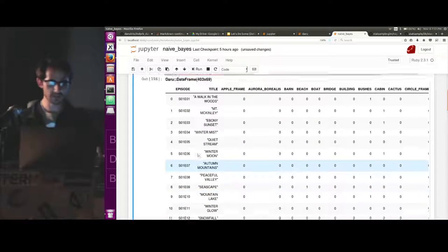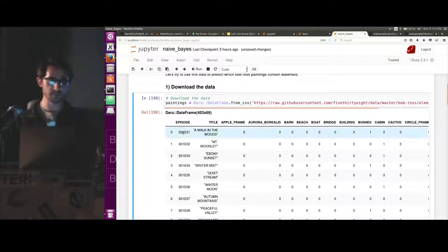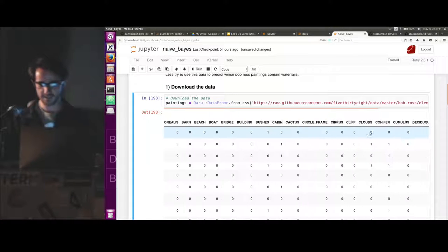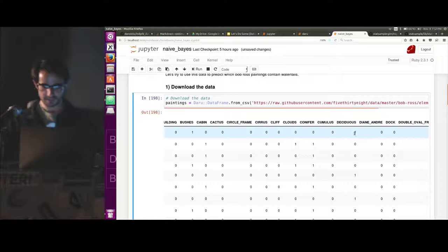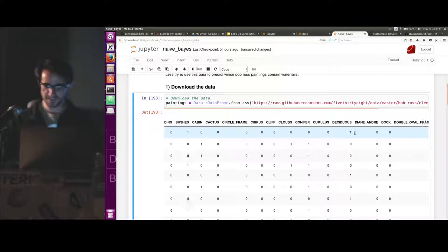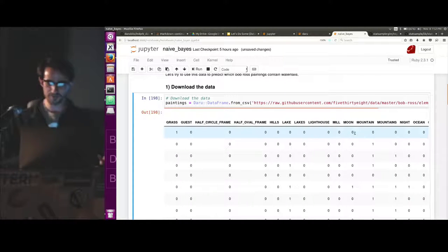Pulling in our data, it looks something like this. So we have, we know what episode a painting came from, we know the title, and we know a bunch of things about it. Like, a walk in the woods contains bushes, and it contains deciduous trees. And all different things. This guy went into a lot of detail.